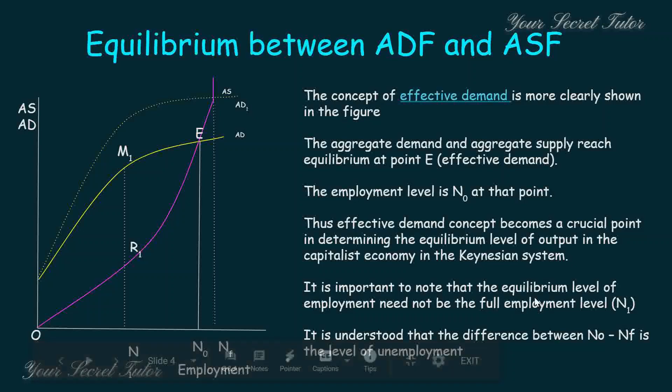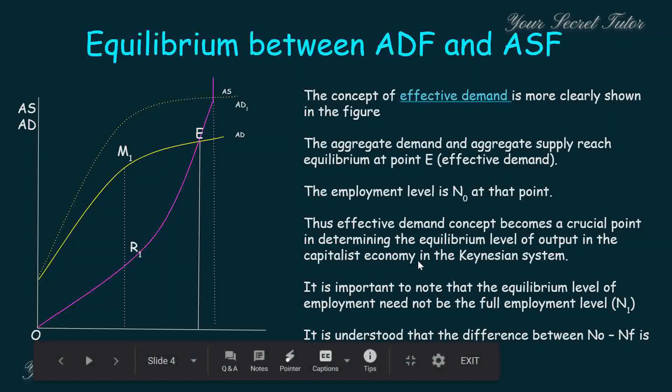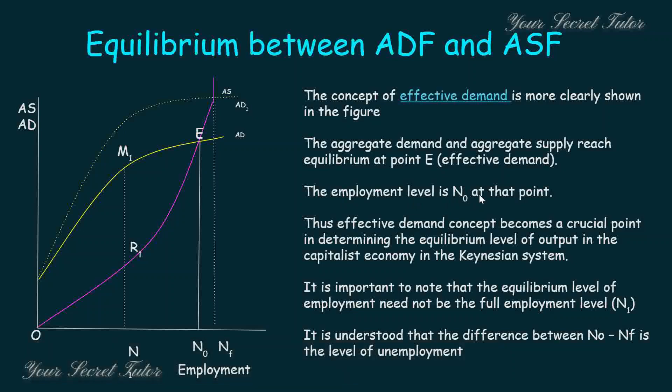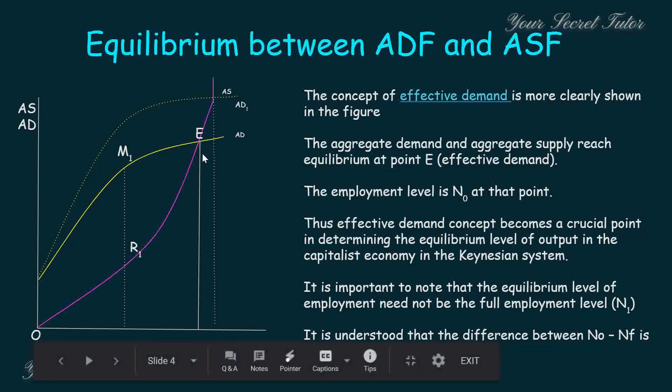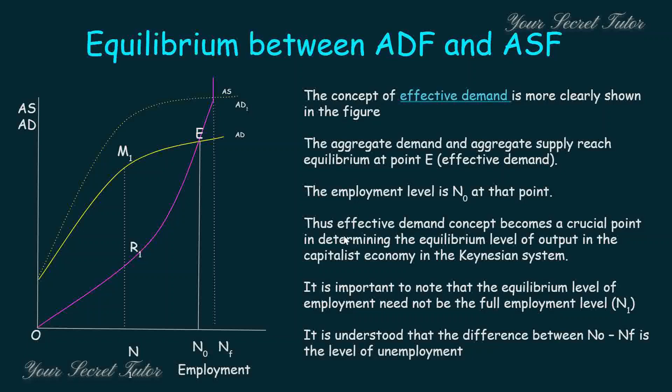Demand and supply meet at the effective demand point. The aggregate demand and aggregate supply reach equilibrium at point E, which is what we call effective demand. At the equilibrium point E, the employment level is O0. The effective demand concept becomes a crucial point in determining the equilibrium level of output in the Keynesian system.